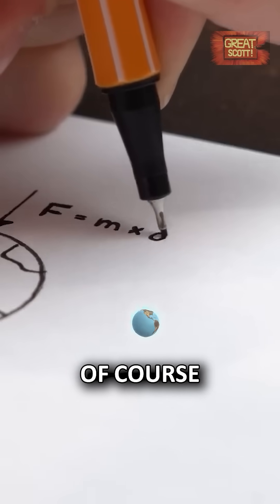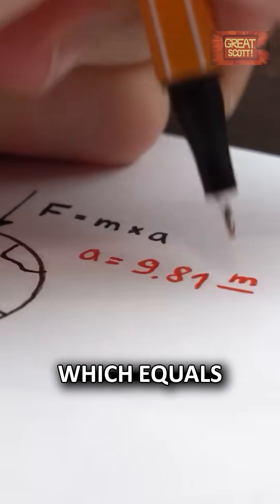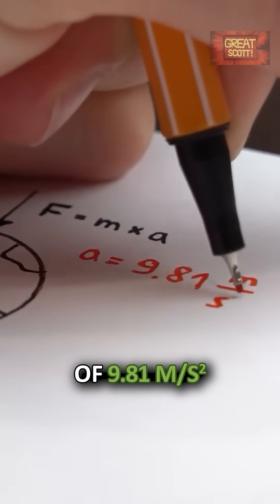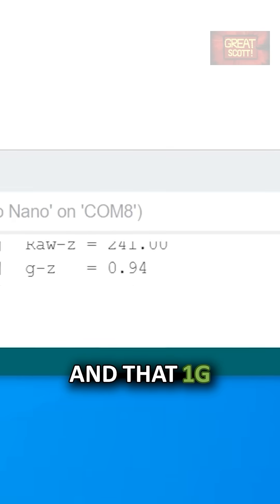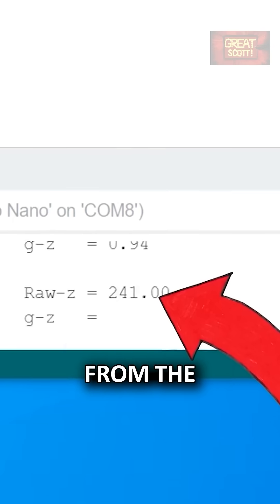The reason is of course Earth's gravitational pull, which equals an acceleration of 9.81 meter per square second, aka 1g, and that 1g is the one from the Z axis output.